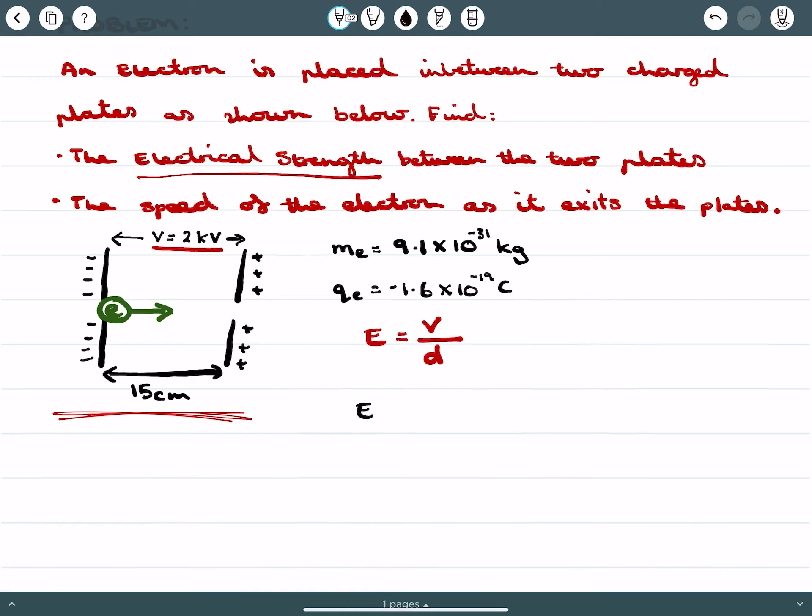what I would be saying is the strength of my electrical field is given by my voltage, 2.0 times 10 to the 3 volts, or 2 kilovolts, over the distance set apart, 15 centimeters. So I'm going to write that as 0.15. And then the strength of my electrical field is given as 13,333 volts per meter. And that's the units that we use for field strength.